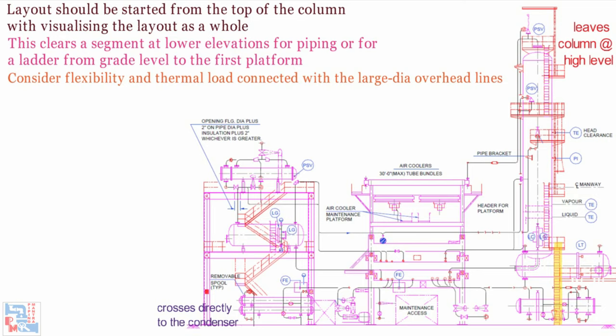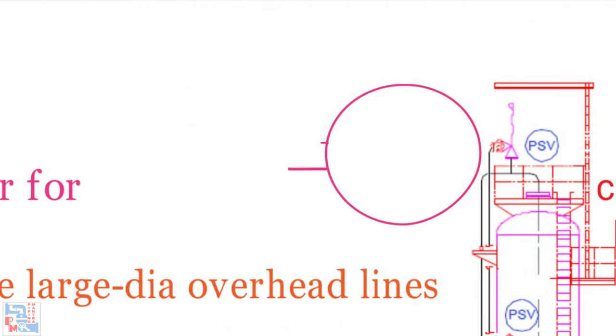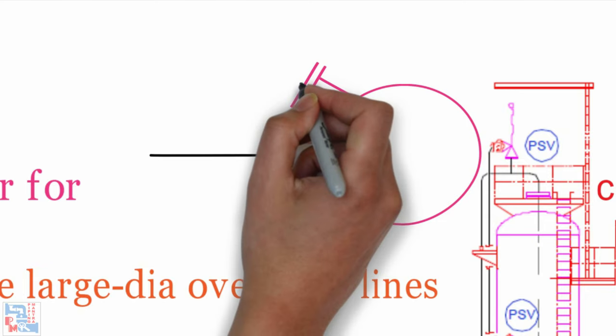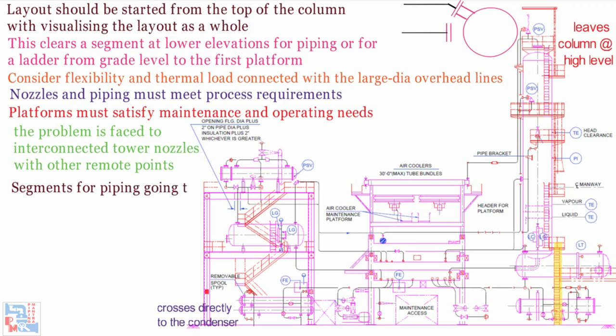On which we will put some light on the later part of the video. Nozzles and pipings must meet process requirements while platforms must satisfy maintenance and operating needs. In routing pipelines, the problem is faced to interconnected tower nozzles with other remote points. The tentative orientation of a given tower nozzle is on the line between tower center and the point to which the line is supposed to run.